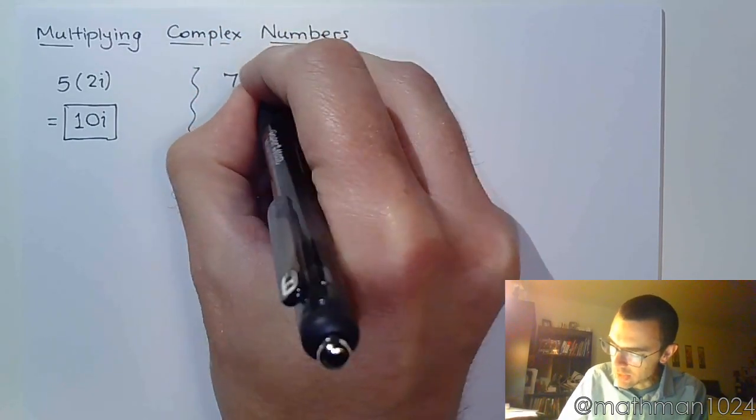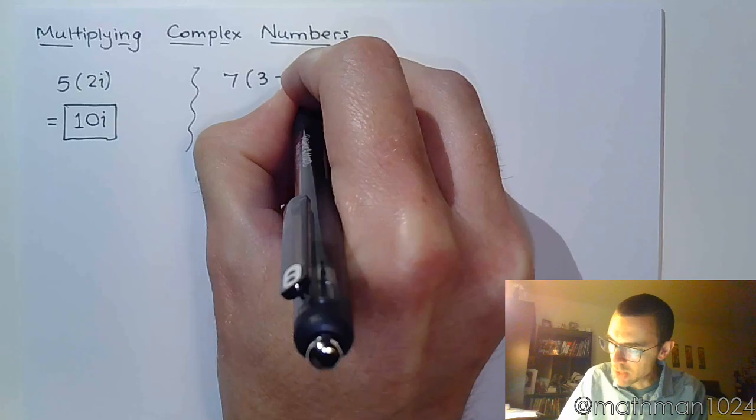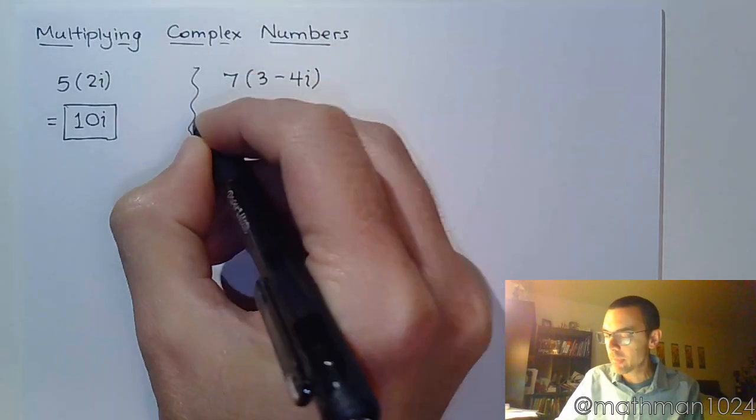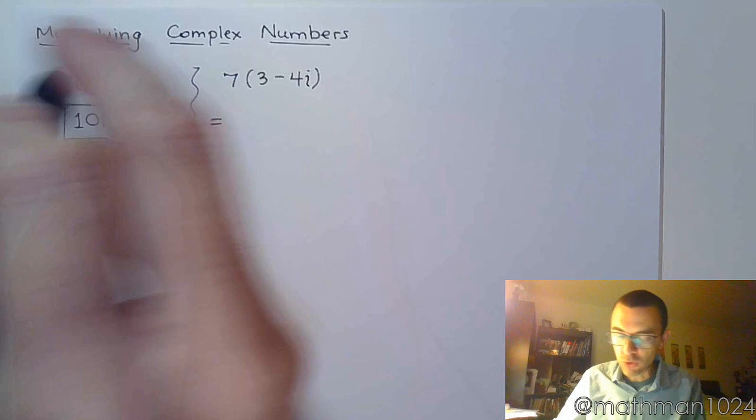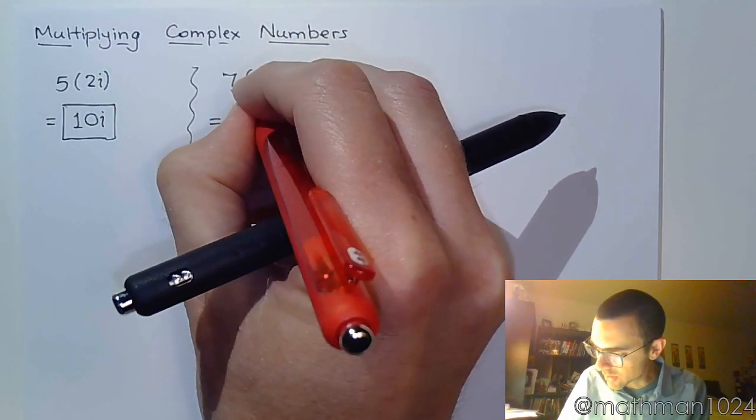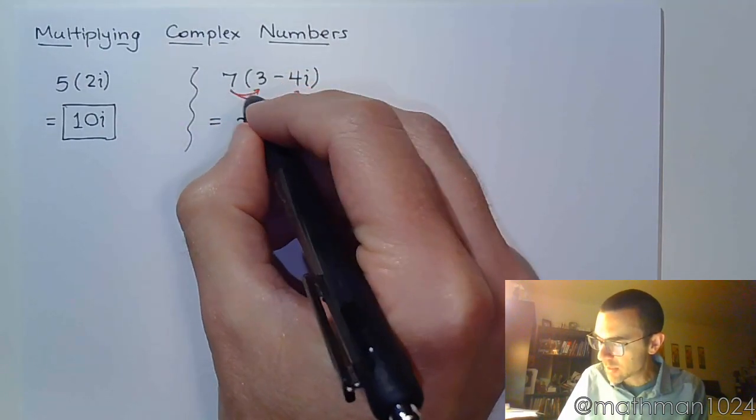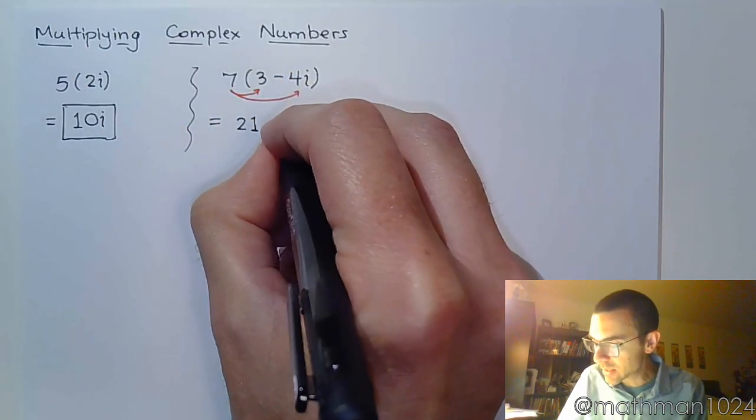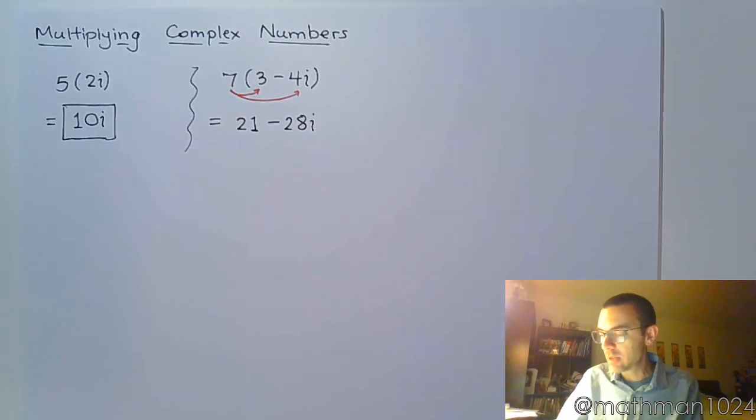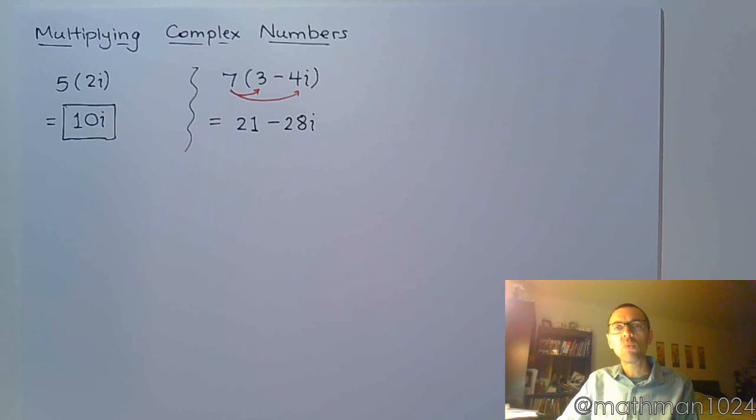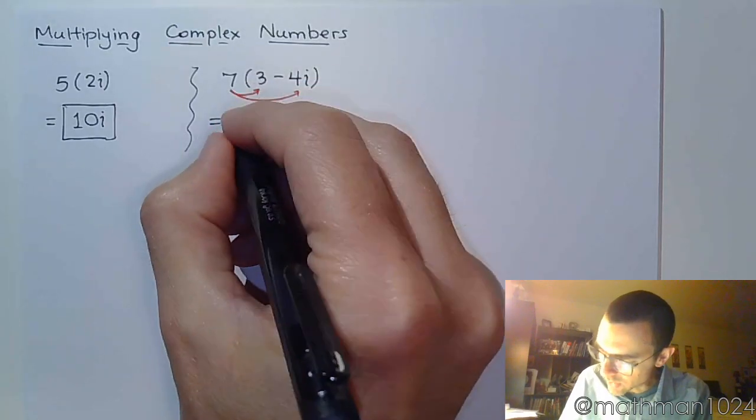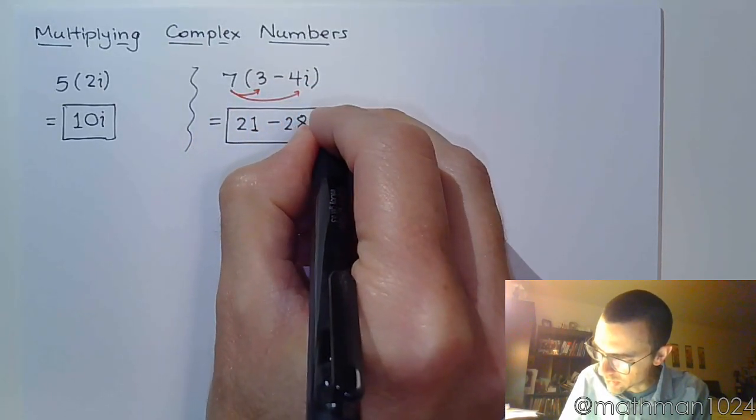If I do 7 times 3 minus 4i, again you're just multiplying. So multiply by distributing the 7. So 7 times 3 is 21, and 7 times negative 4 is negative 28, and of course there's the i. Now one of the things you need to understand about leaving your final answers for complex numbers, they need to be in standard form, which means you've got your real part followed by your imaginary part. So real, then imaginary, so everything is good to go here.